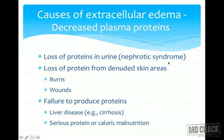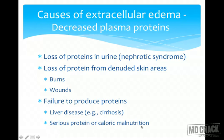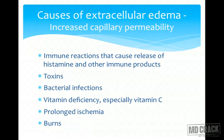Other causes of edema include loss of proteins in the urine as seen in nephrotic syndrome — this decreases oncotic pressure. Loss of proteins from denuded skin areas, as in burns or wounds. Failure to produce proteins: the liver is the main site of plasma protein synthesis, so liver disease such as cirrhosis decreases plasma protein production, decreasing oncotic pressure. Protein concentration can also decrease in malnutrition.